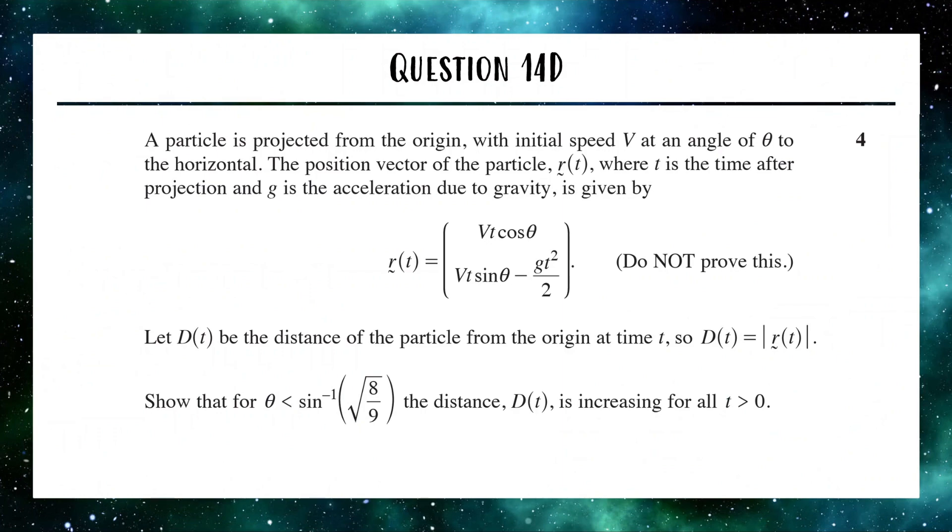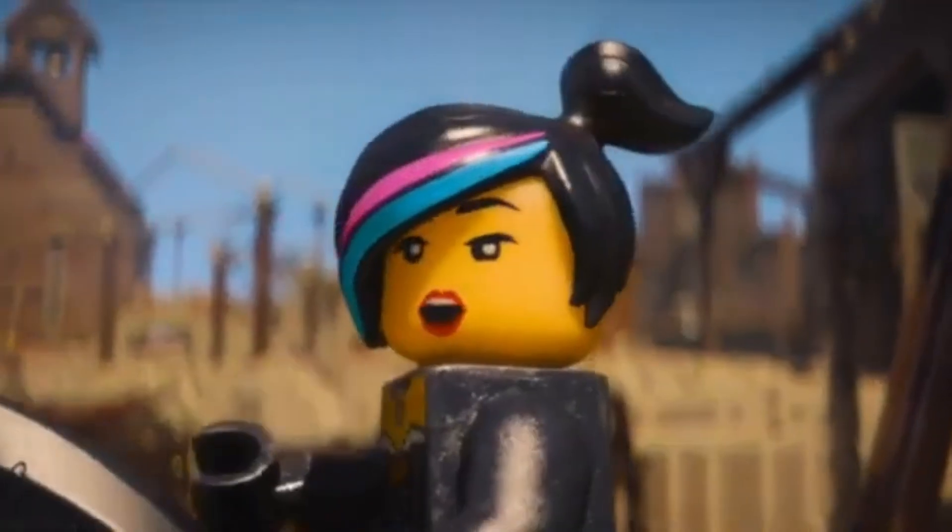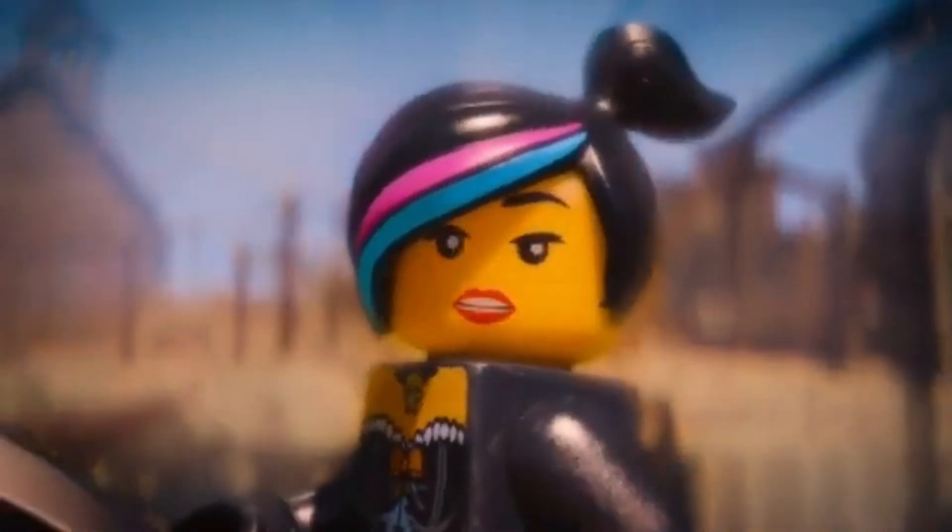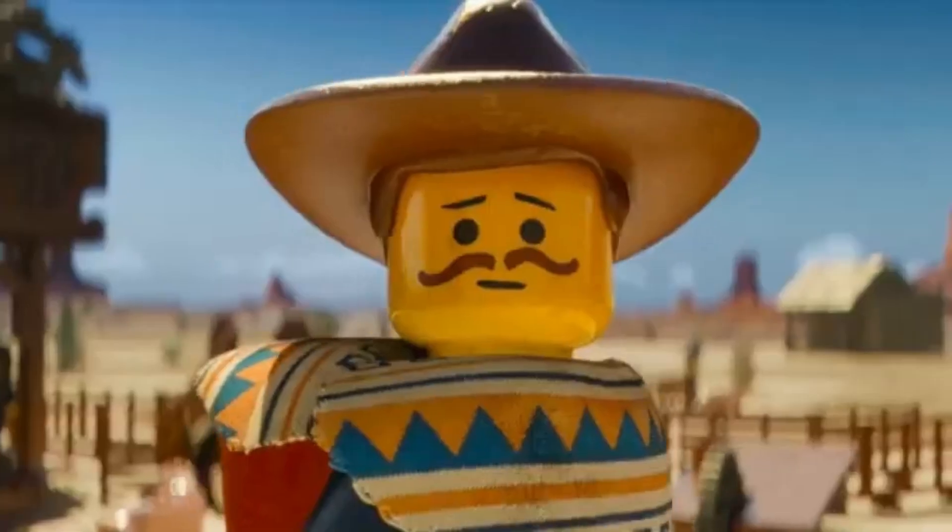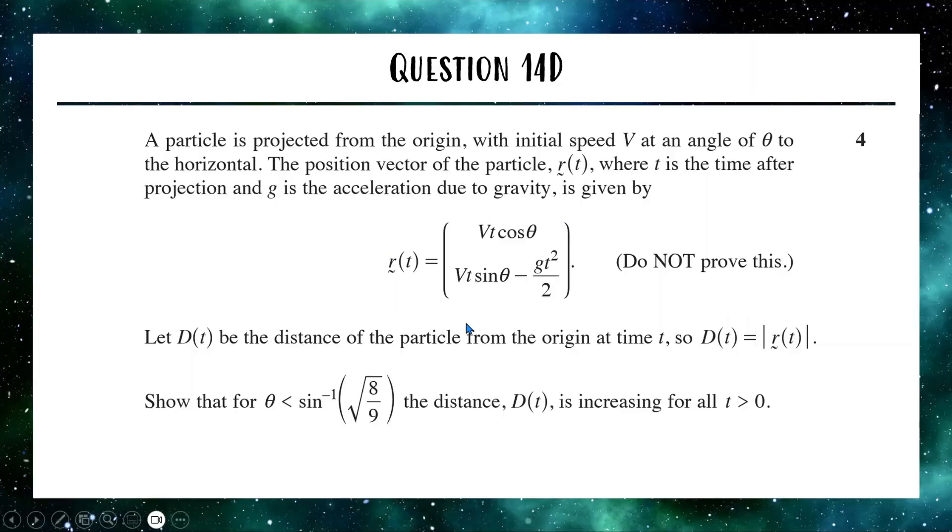We have a particle projected from the origin. Here is the displacement vector of our particle. Don't you dare prove it. And we're saying that let D of T be the distance of the particle from the origin. So that's the magnitude of our displacement vector.